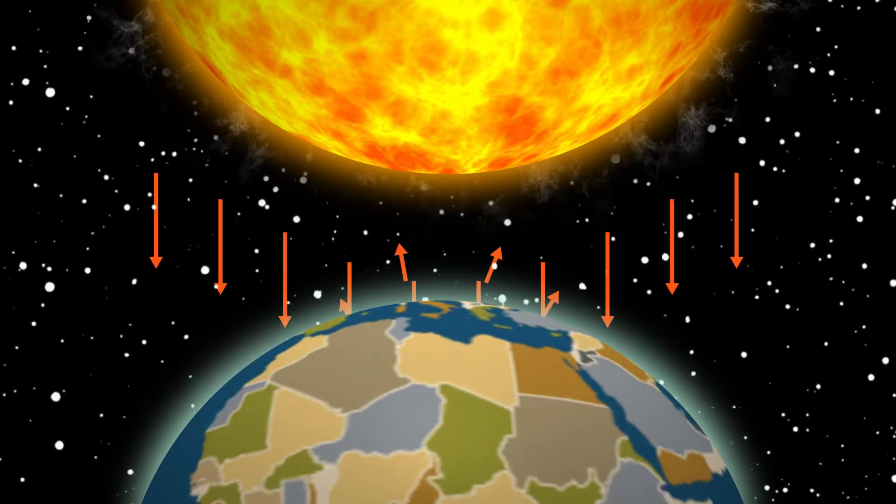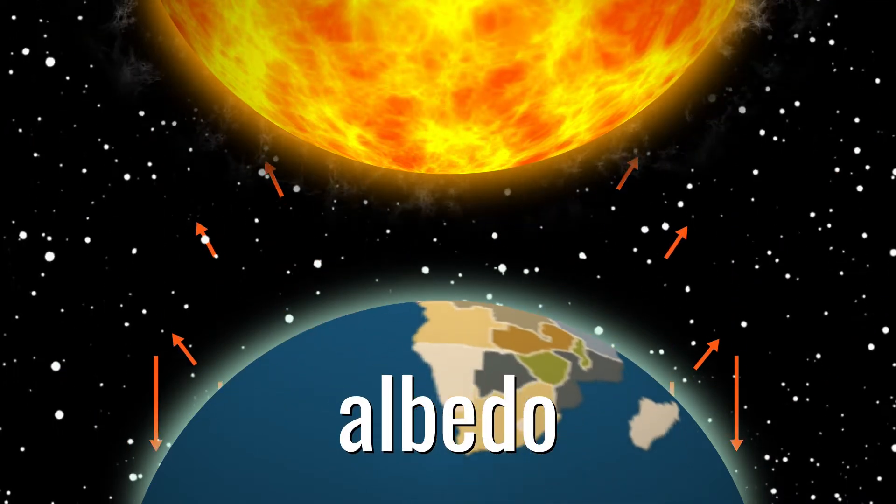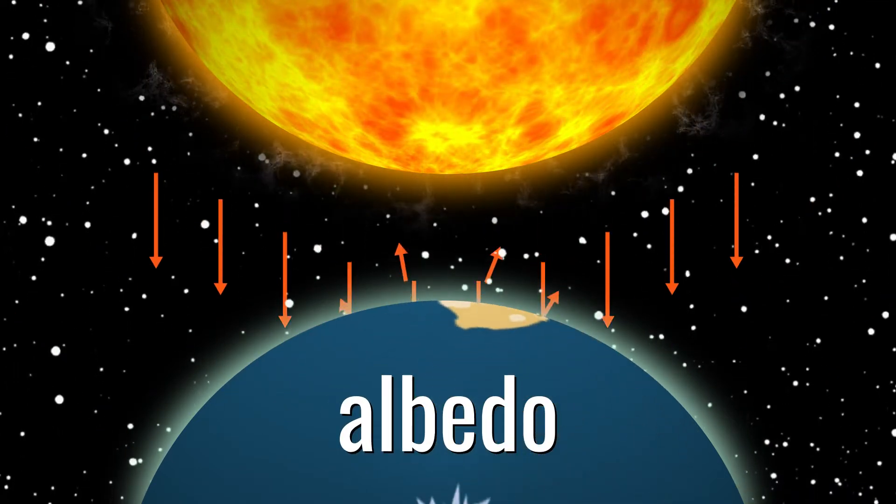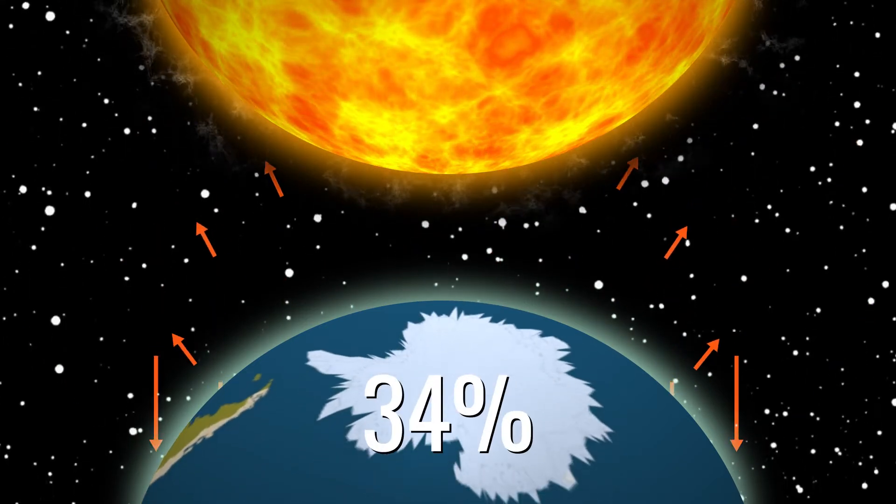Much of its light is reflected. In fact, the Earth's albedo, which is the ability of a surface to reflect sunlight or solar radiation, reflects back around 34 percent.